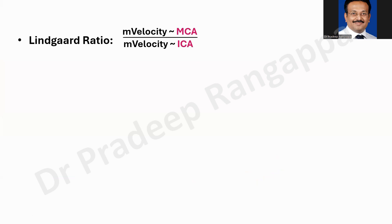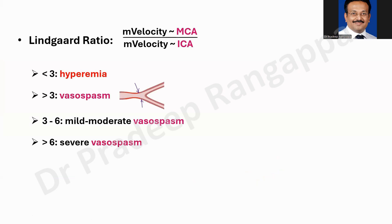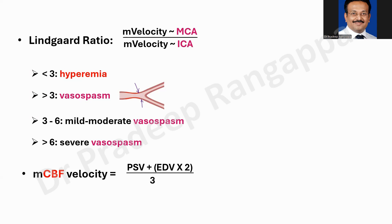We also calculate the Lindegaard ratio: mean velocity of the middle cerebral artery divided by mean velocity of the internal carotid artery. Less than 3 indicates hyperemia; 3 to 6 is mild to moderate vasospasm; more than 6 is severe vasospasm. For the internal carotid artery velocity, just place the probe in the neck and take the velocity. On our Sonosite machine, it gives systolic and diastolic velocity but not mean directly, so we use the formula: peak systolic velocity plus (end diastolic velocity × 2), divided by 3, to calculate mean cerebral blood flow velocity.